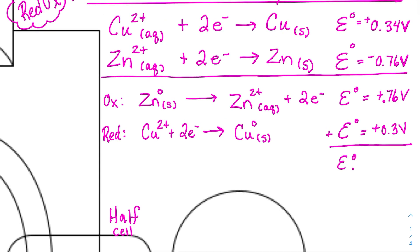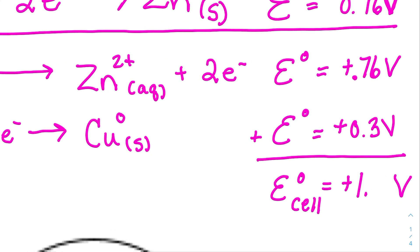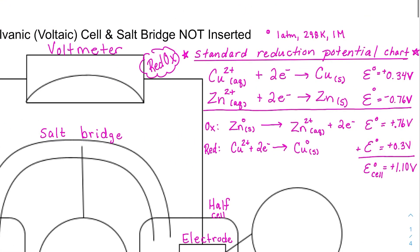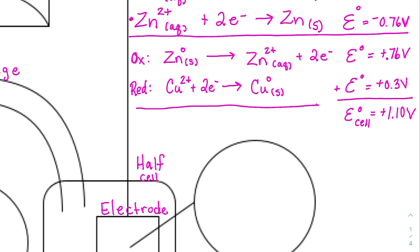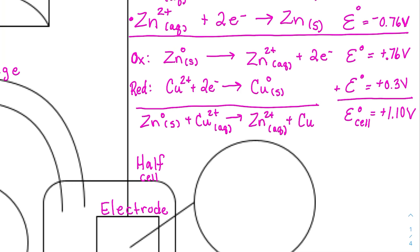Adding the potentials gives us a positive 1.10 volts for the E cell. The electrons cancel — both half reactions involve two electrons, so that's straightforward. The overall reaction is: zinc solid reacts with copper 2+ ions (aqueous), producing zinc ions (aqueous) and copper solid — with oxidation states of 2+ for zinc ions and zero for copper solid. That's the overall redox reaction, confirming we should get a positive voltage.